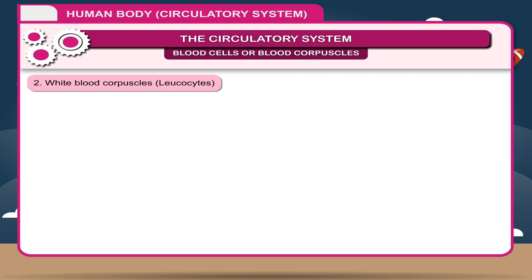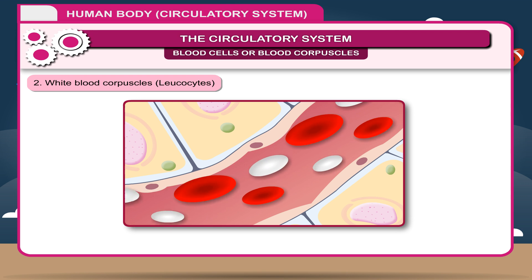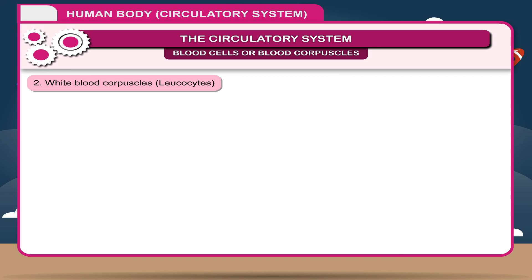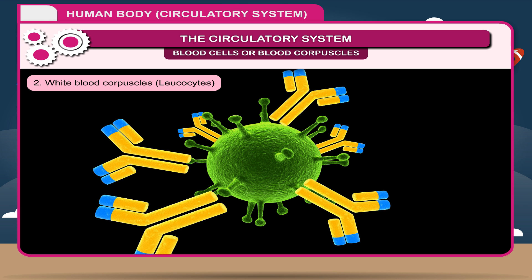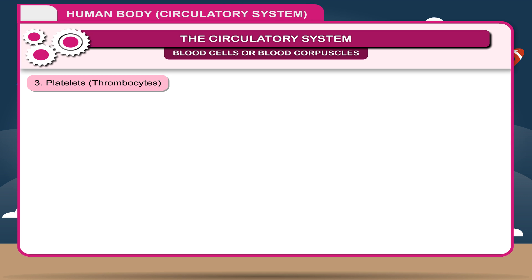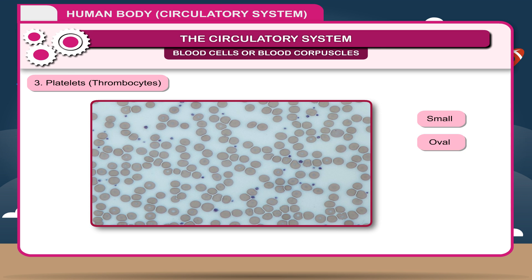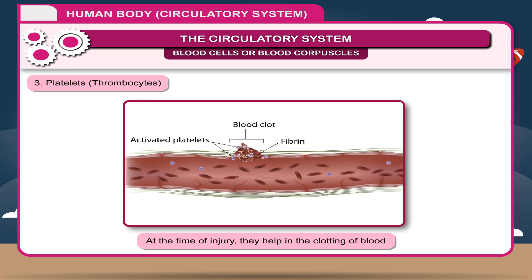White blood cells, or leucocytes, are large, irregular-shaped, nucleated structures. Their number varies from 5,000 to 8,000 per milliliter of blood and increases during an infection in the body. These cells form antibodies which kill the antigens produced by germs in the blood. Platelets are small, oval, colorless, flat, granular corpuscles without nuclei. At the time of injury, they help in the clotting of blood.